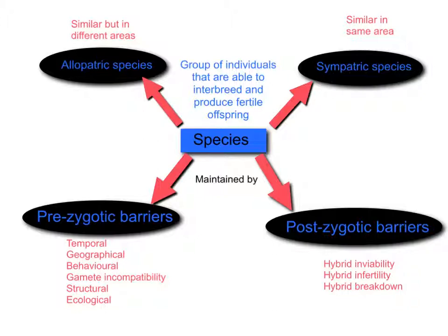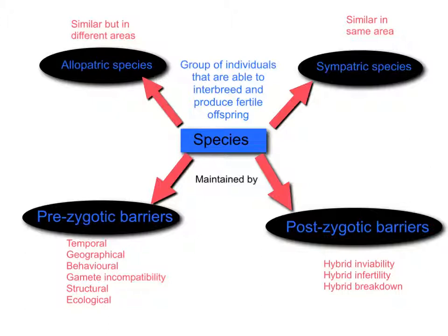On the next slide, we'll look at how these processes take place to generate species in both an allopatric and sympatric manner. To maintain species separation, we need to prevent individuals interbreeding, or prevent them from being able to produce fertile offspring. If they are interbreeding and producing fertile offspring, they are technically the same species, which is why these barriers are an important defining feature.